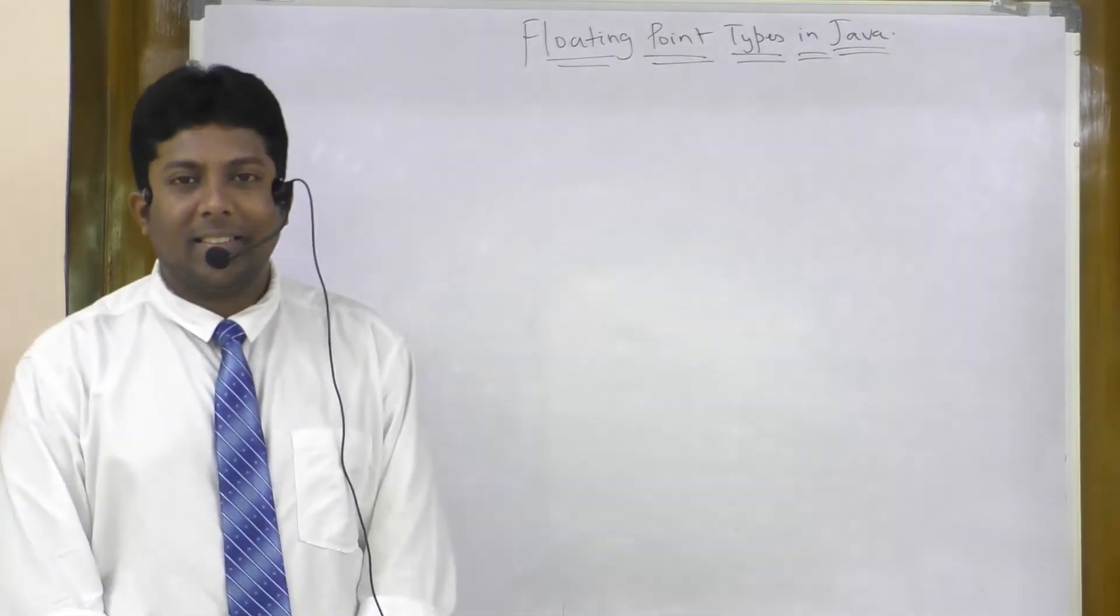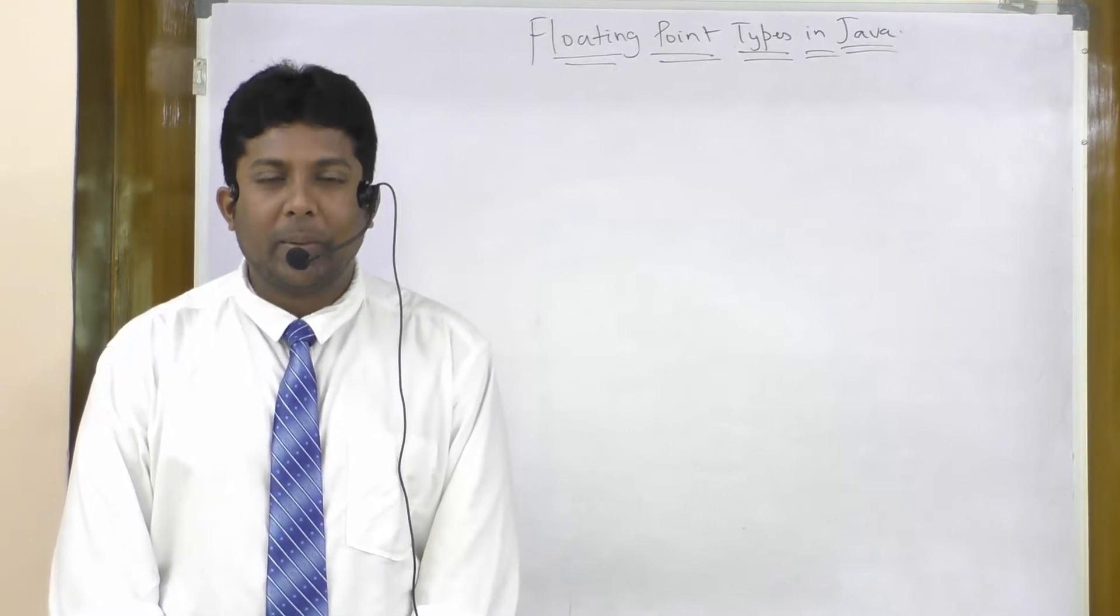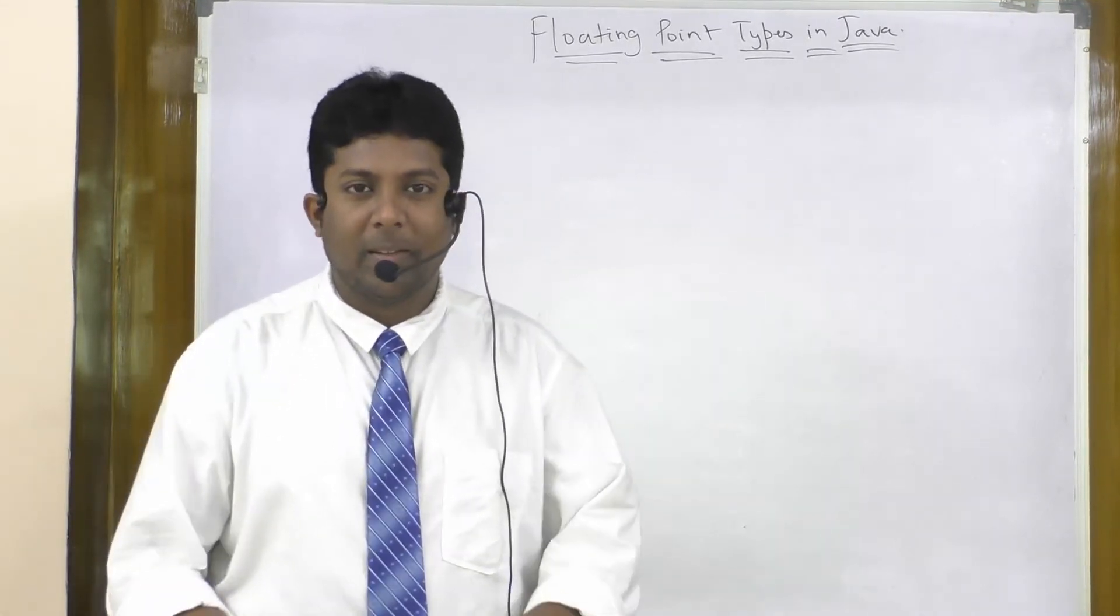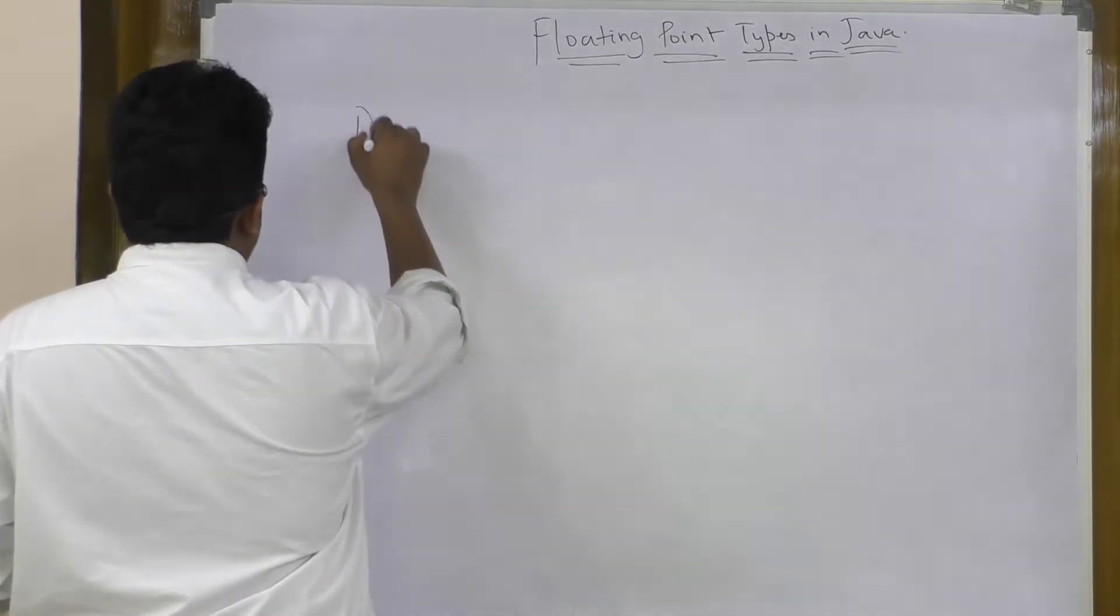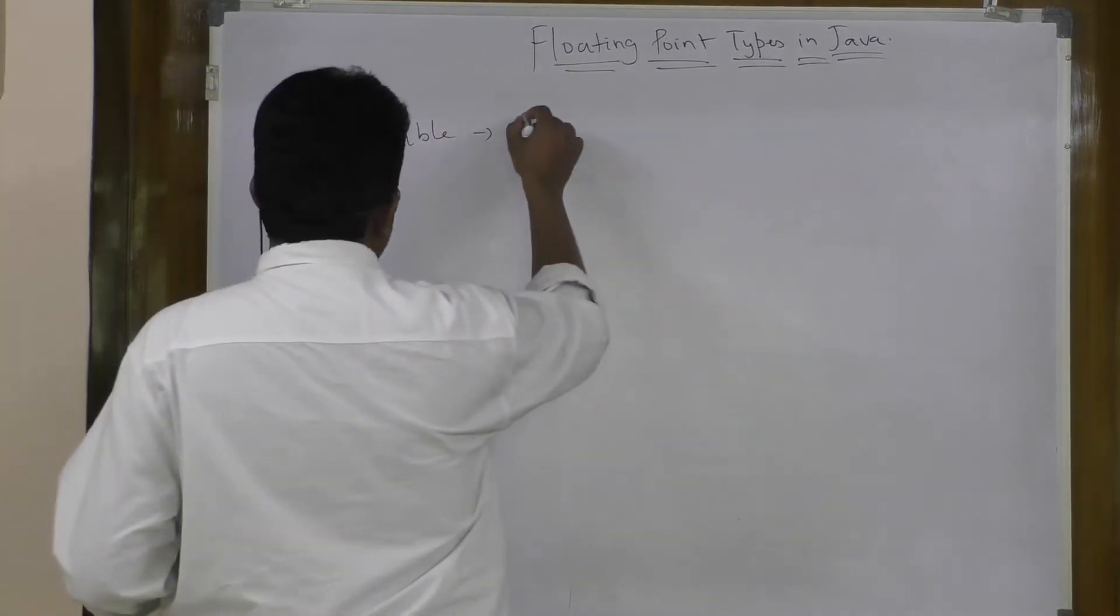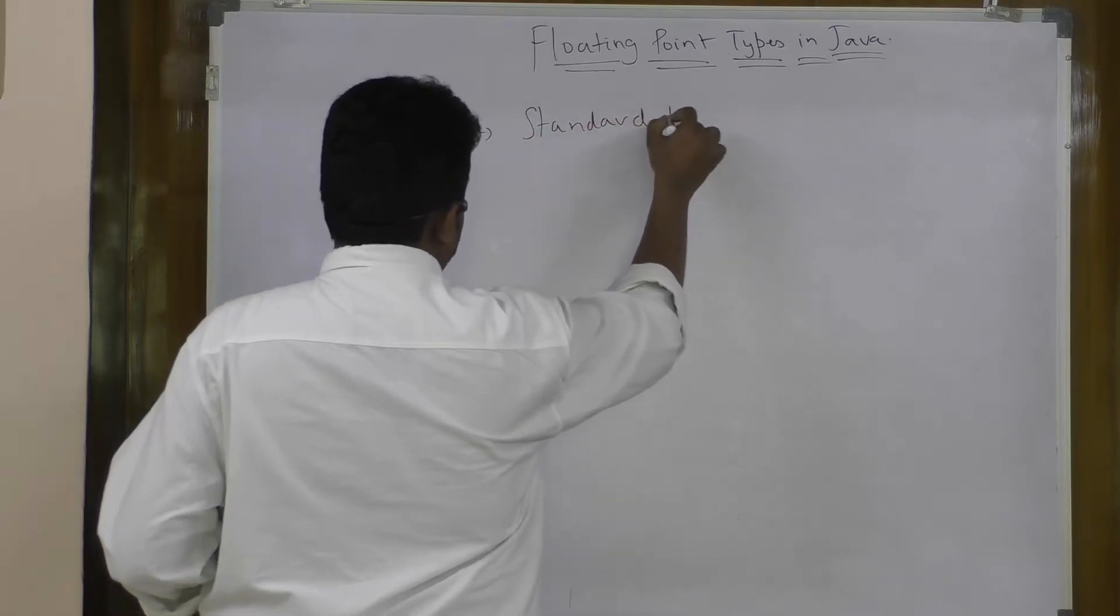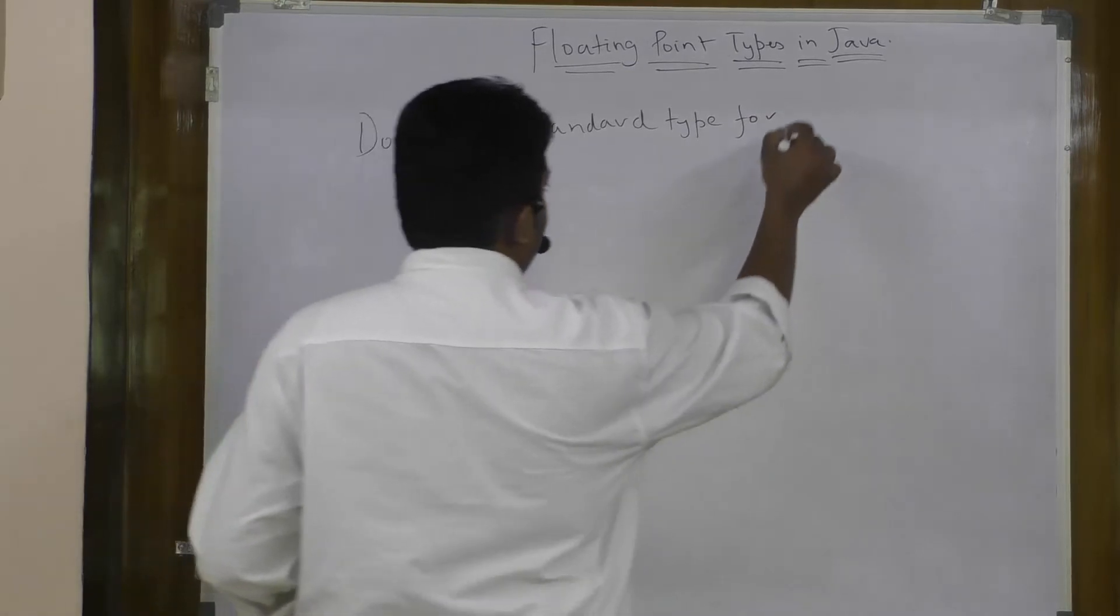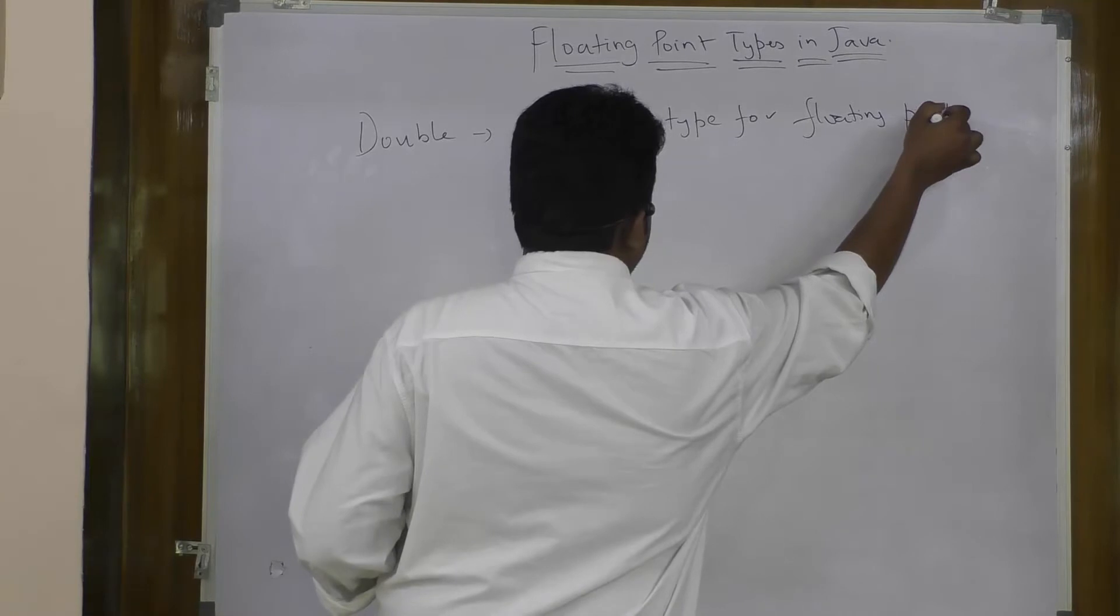This is Sriganthasare. So in this lesson we are going to look into the second floating point type, which is double. Double is a standard type for floating point data.